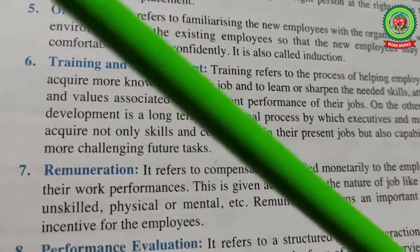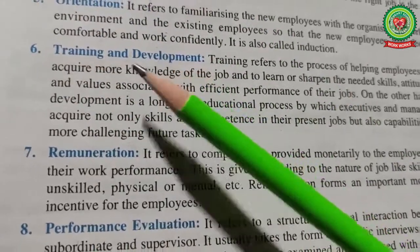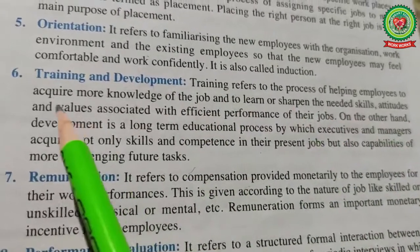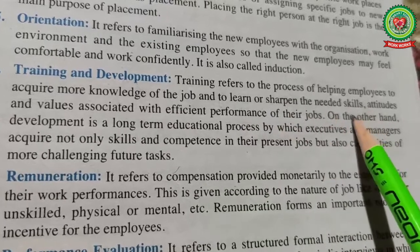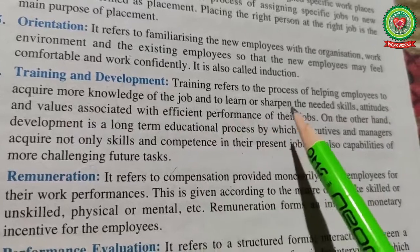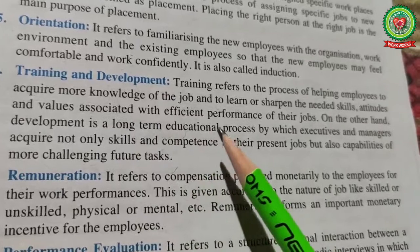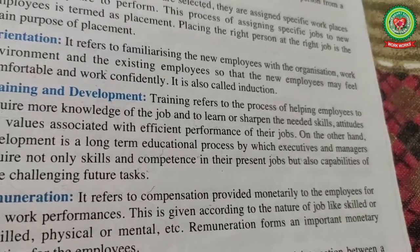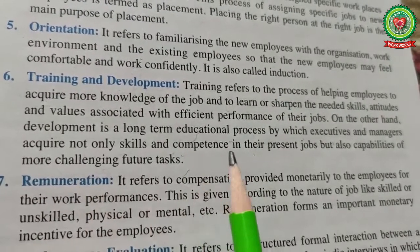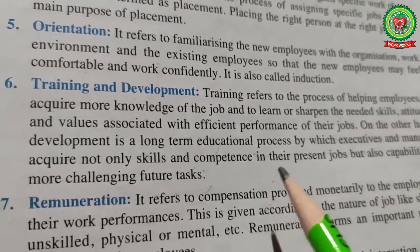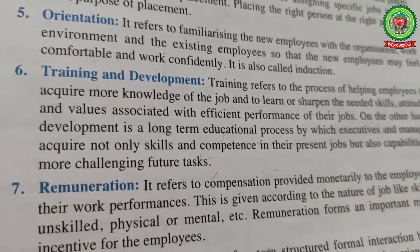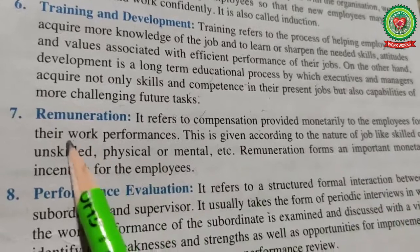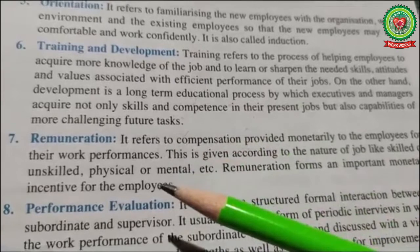Training and development: there are two types of training — on-the-job and off-the-job. Training refers to helping employees acquire more knowledge and sharpen the needed skills, attitudes, and values associated with effective job performance. Development, on the other hand, is a long-term educational process by which executive managers acquire not only skills and competence for their present job but also capability for more challenging future tasks. In development, knowledge and education are provided to managers not just for present work but to prepare them to accept future challenges.